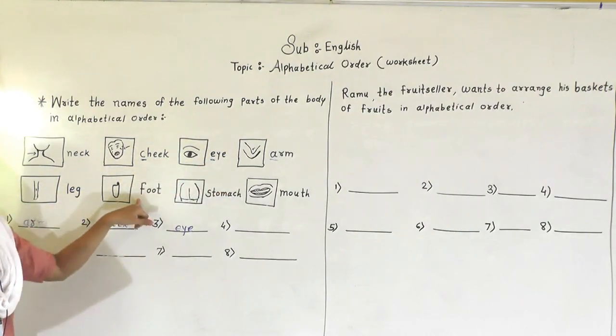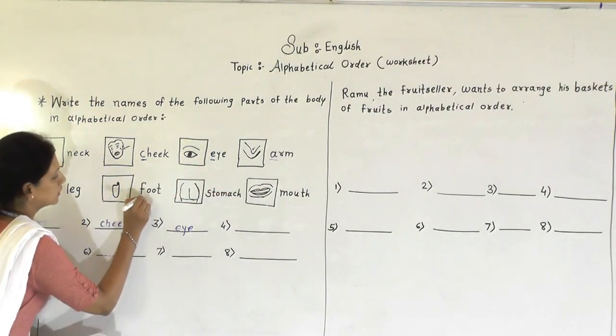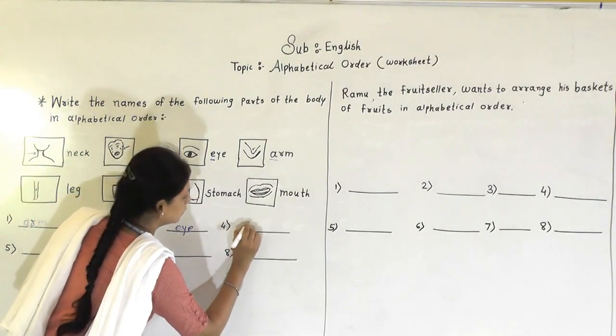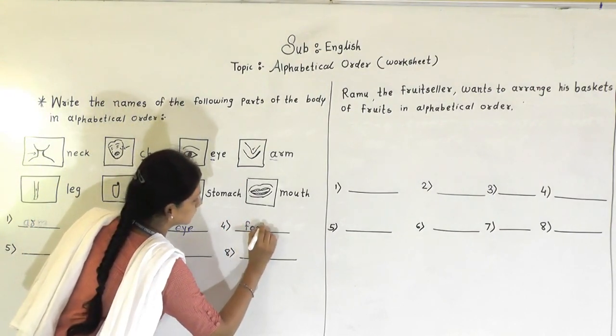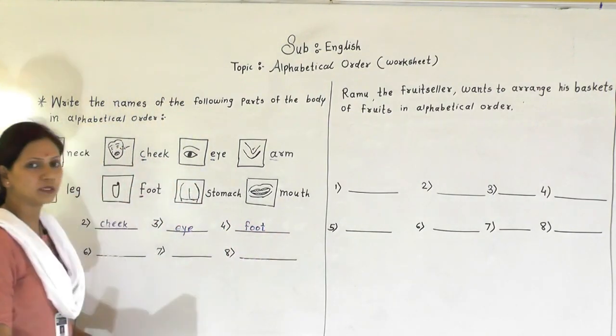A over, C over, then E. A, B, C, D, E, F. So foot is the next word. So here you write down foot. F, double O, T, foot.